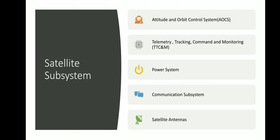The different subsystems are: the attitude and orbit control system, also known as AOCS; telemetry, tracking, command and monitoring, that is TTCNM; the power system; then we have the communication subsystem and the satellite antennas, which in many texts and books are actually covered within the communication subsystem itself.